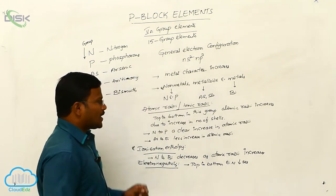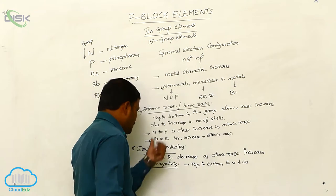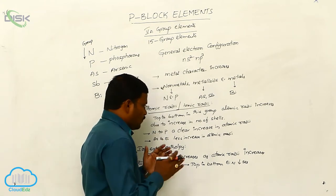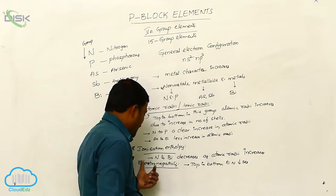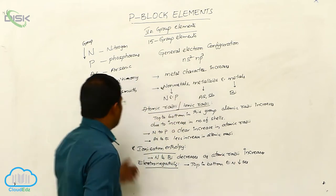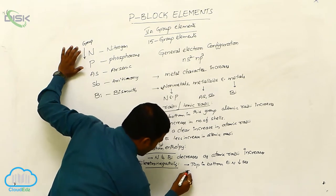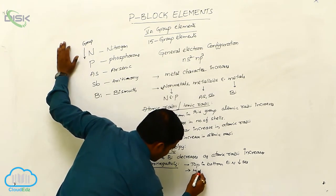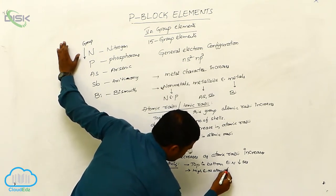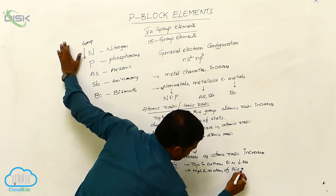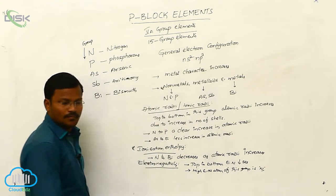Generally, atoms with less atomic radii show more electronegativity. Due to the increase in atomic radii from top to bottom, electronegativity values decrease. Among the five elements of this group, nitrogen has the highest electronegativity value — nitrogen is the most electronegative atom of this group.